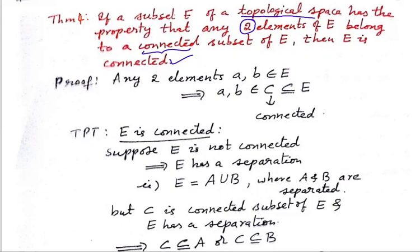Let us take two elements a and b belonging to E, and let those two elements belong to a connected subset of E. So there is C which is a connected subset of E. What we have to prove? To prove that E is connected. We have understood the theorem — we have to prove E is connected.